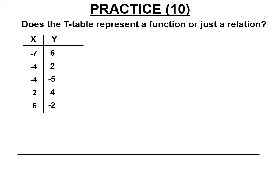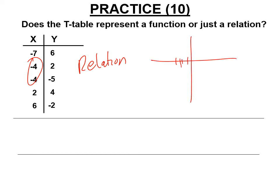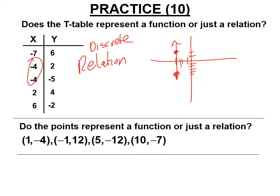Looking at another table: there are duplicates in the x-values — for example, -4 appears twice. So this is a discrete relation. If you graphed it, those points would sit right on top of each other. Then looking at a different set of points with no duplicates in the domain, this is a discrete function.